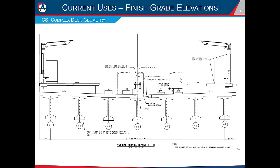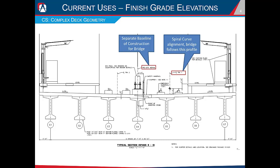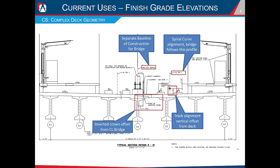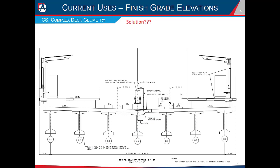This was a pretty complex scenario in terms of deck geometry. The typical section shows the separate baseline of construction and the track alignment on the spiral curve, which the bridge follows for its profile. The top of the track alignment also had a vertical offset from the top of the deck, and there was an inverted crown that was offset from the center of the bridge as well. It doesn't really get much worse than this.